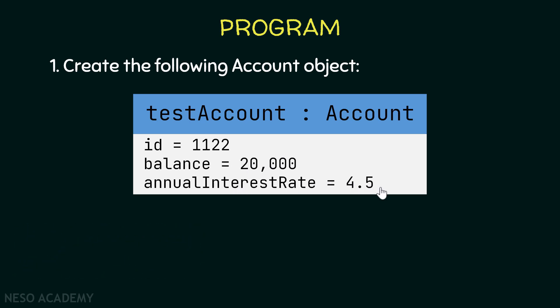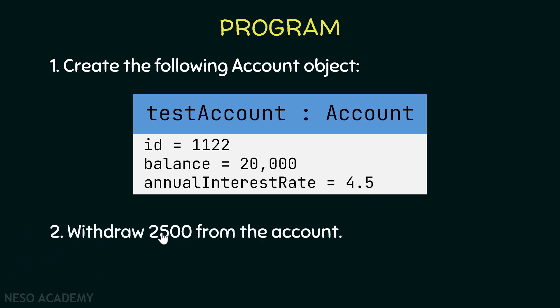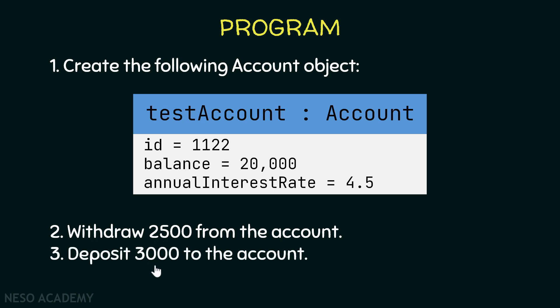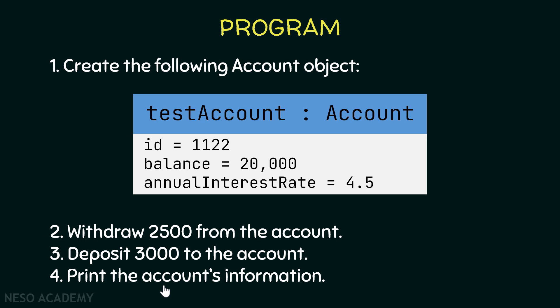After we create the object, we want to withdraw 2500 from the account, then deposit 3000, and finally print the account's information — the id, the balance, the annual interest rate, and the date created. Pause the video and implement this program.